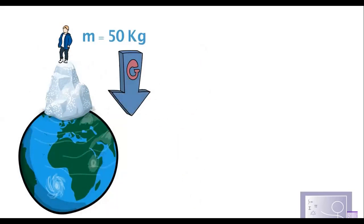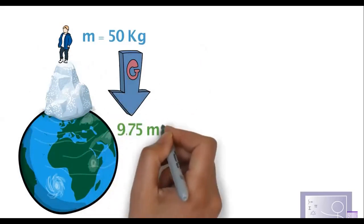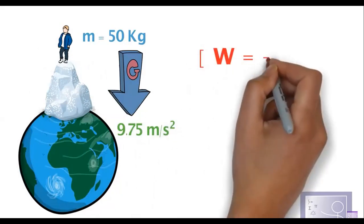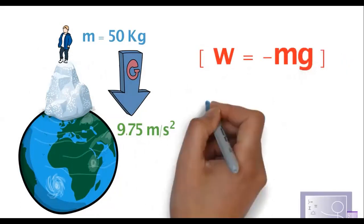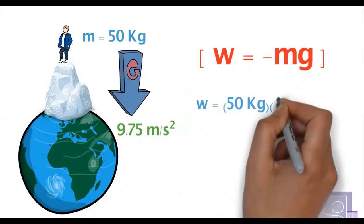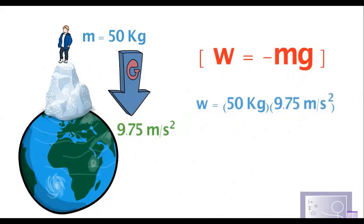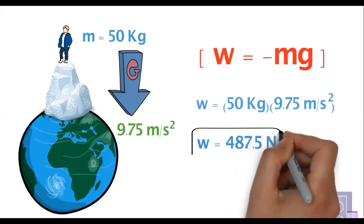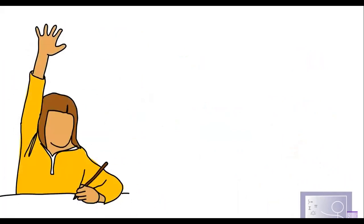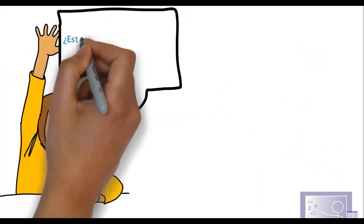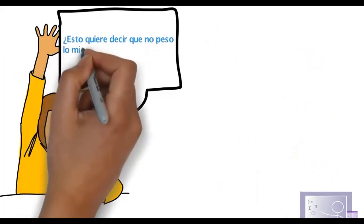La aceleración de la gravedad a la cima del Everest es de 9.75 m/s². Si tenemos la misma masa, podríamos pesar: 50 kilogramos por 9.75 m/s², que nos daría un peso de 487.5 newtons —relativamente medio kilo menos que si estuviéramos a nivel del mar. Esto nos plantea los conceptos de peso y fuerza de gravedad. Por ejemplo, ¿esto quiere decir que no pesamos lo mismo en cualquier planeta?